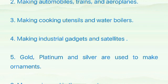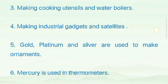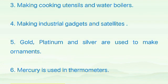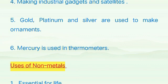Metals are used for making industrial gadgets and satellites. Gold, platinum and silver are used to make ornaments. Mercury is used in thermometers.